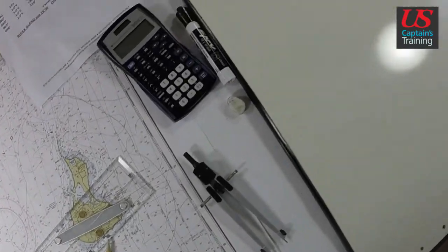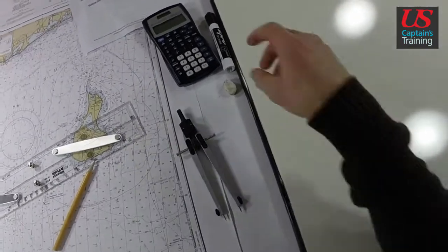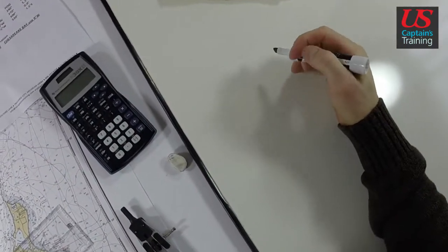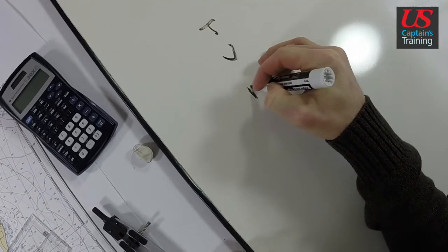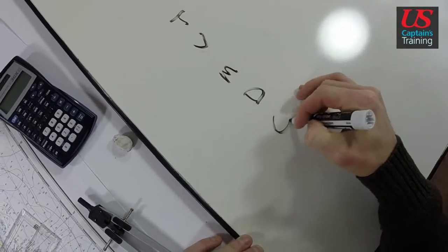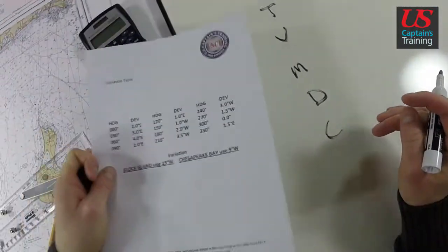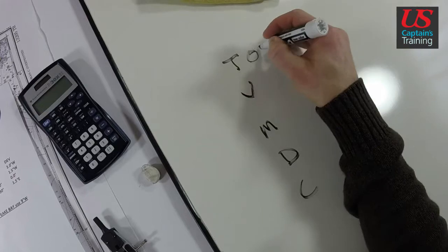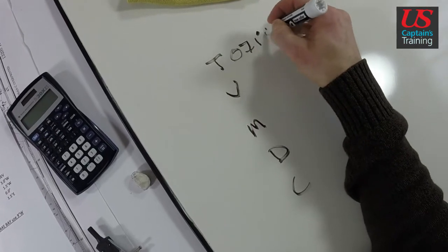So we need to correct to get to compass because it asks what's the compass course. So we have T, V, M, D, C. And we're going to need our deviation table for this. But our true is 71 degrees. 71 degrees true.